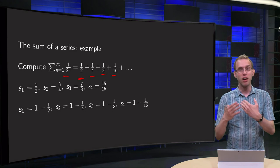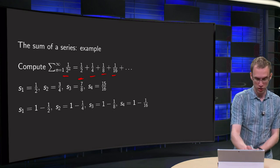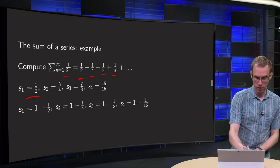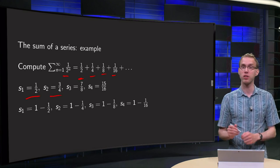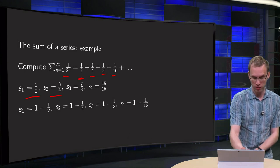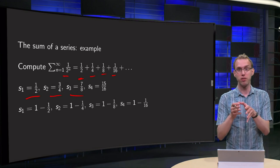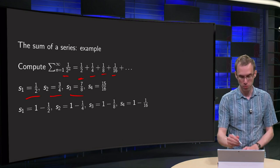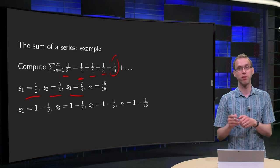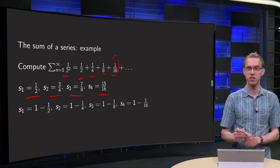Let us write down the first few partial sums to get an idea. s1 is just 1/2, the first term. s2 equals 1/2 plus 1/4, so 3/4. s3 equals 3/4 plus 1/8, which equals 7/8. And s4 is 7/8 plus 1/16: that is 14/16 plus 1/16, which equals 15/16.